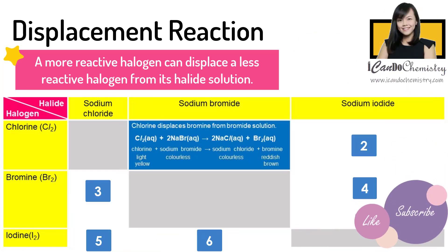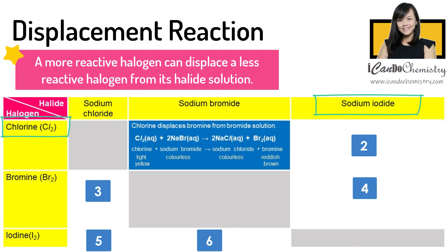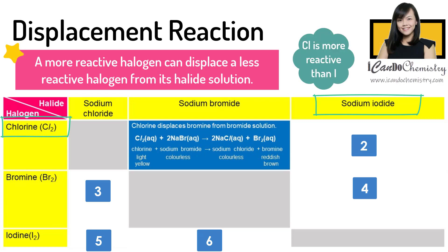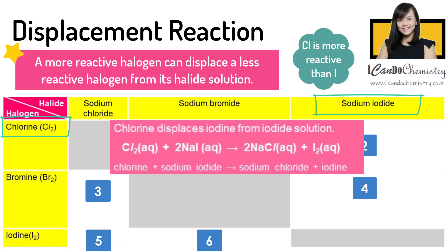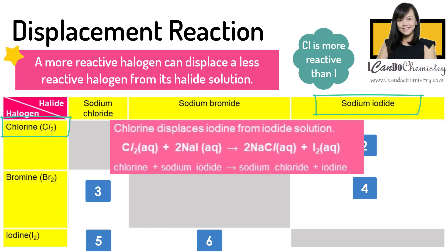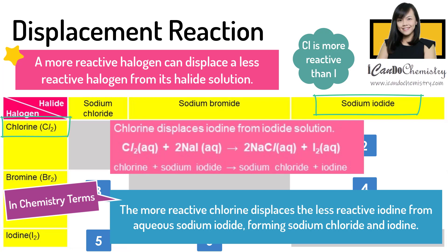Scenario two: what if aqueous chlorine is added to iodide solution? Again, reactivity of halogens decreases down the group. Chlorine is more reactive than iodine, hence chlorine will be able to displace iodine from iodide solution. So chlorine will take the place of iodine, forming sodium chloride. In chemistry terms, the more reactive chlorine displaces less reactive iodine from aqueous sodium iodide, forming sodium chloride and iodine.